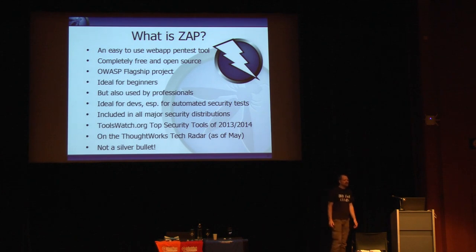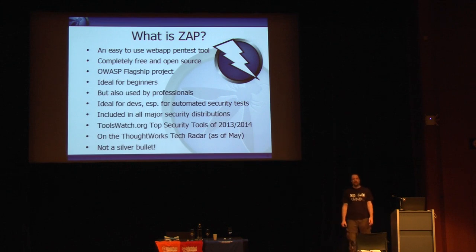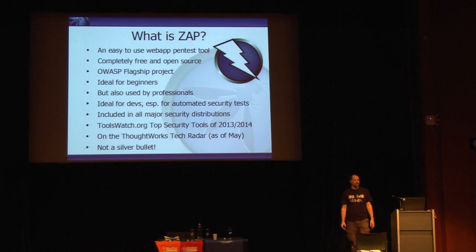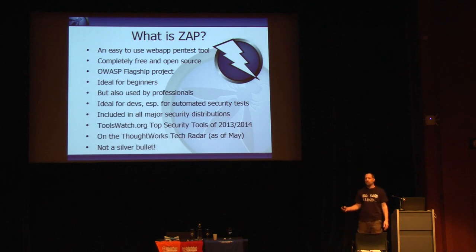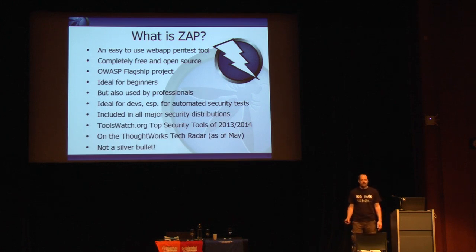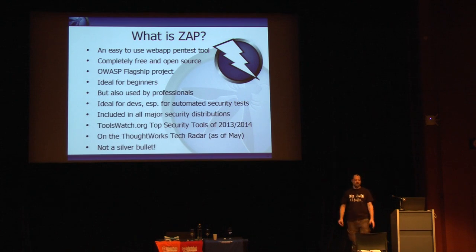ZAP is a hacking tool. It is completely free and open source. It is an OWASP flagship project — flagship projects are the most mature and most suitable for people to adopt. People are telling me ZAP is becoming as well known as the OWASP Top 10, which is very good news. It is intended to be ideal for beginners — that's how I started — but it's also being used a lot by security professionals.